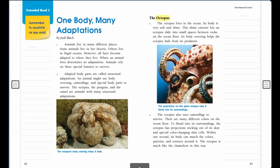The octopus lives in the ocean. Its body is very soft and slimy. This slimy exterior lets an octopus slide into small spaces between rocks on the ocean floor. Its body covering helps the octopus hide from its predators.